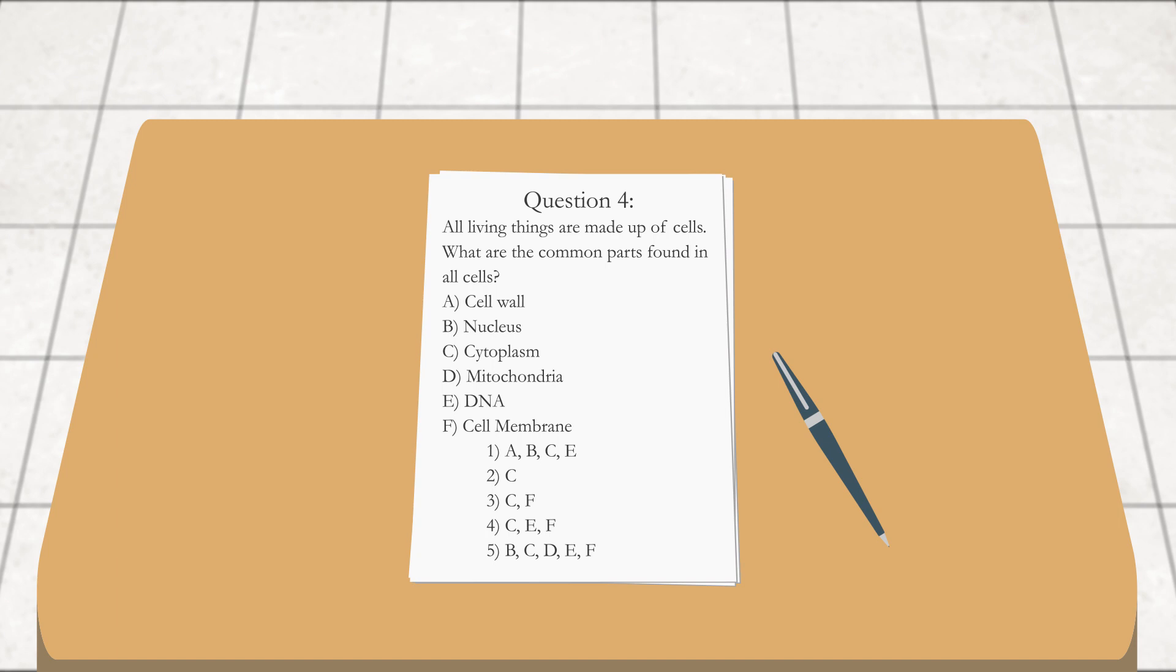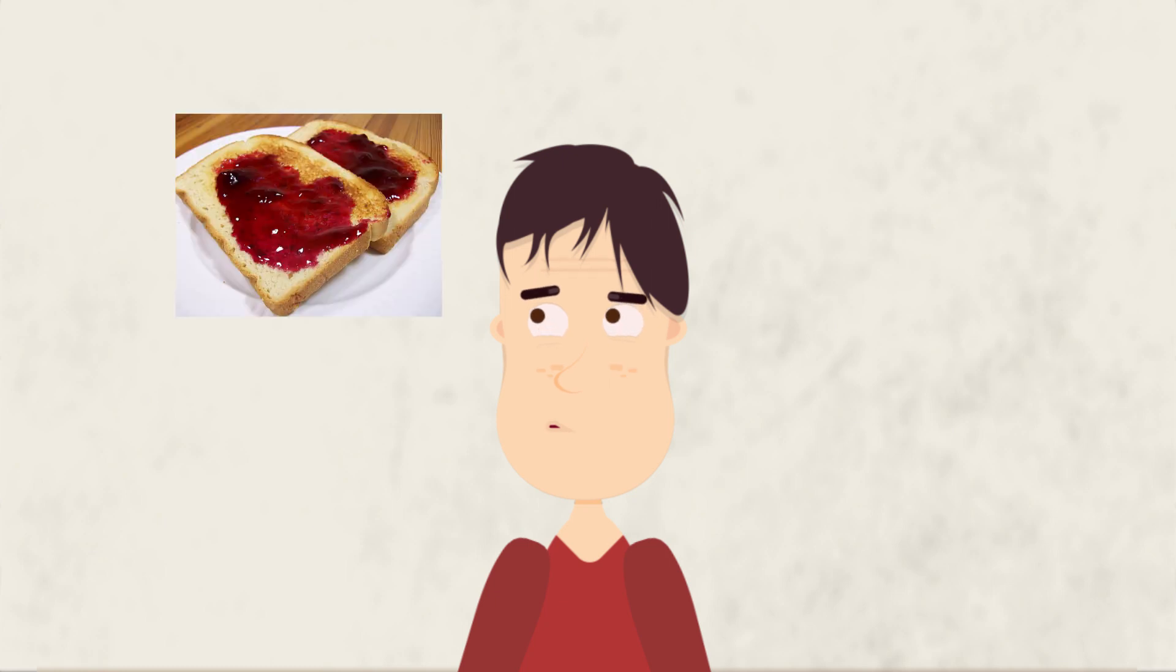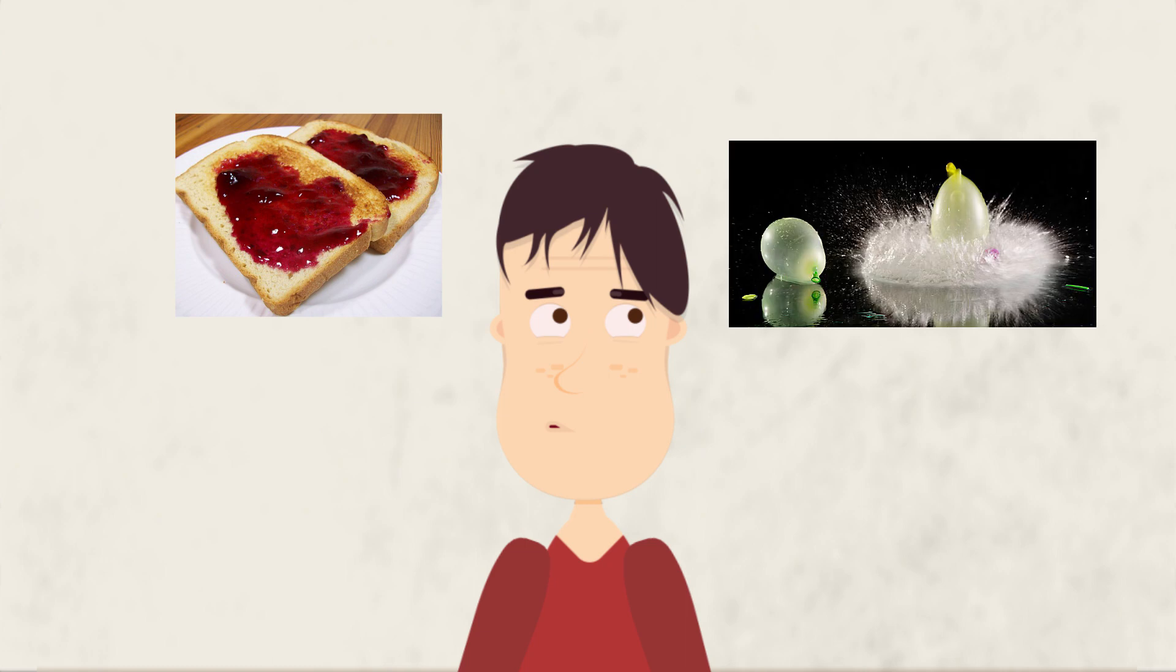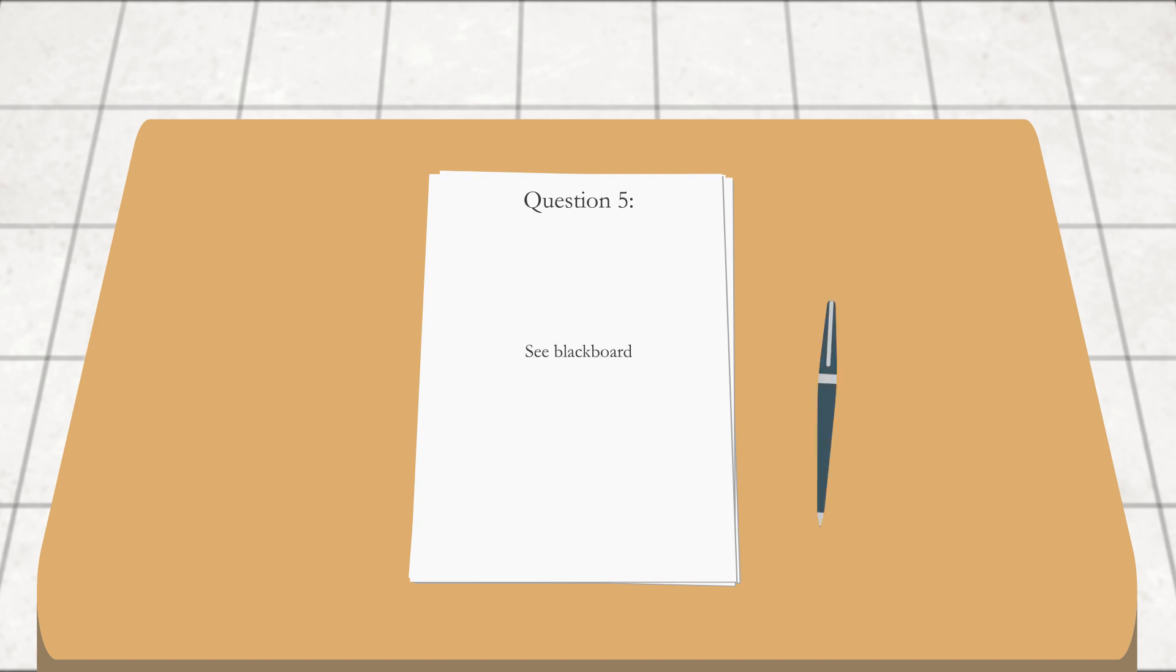DNA is the thing that allows Spider-Man to climb walls and become a spider. Cell membrane is the outside of the cell. Okay, all these sound pretty important. So um, I'm gonna say you need cytoplasm and a cell membrane. Those two. I'm gonna say, I'm gonna say three. All right, so we're halfway there, that one's done.